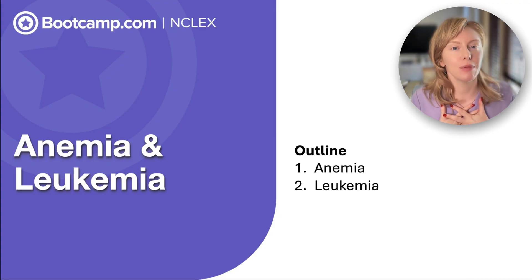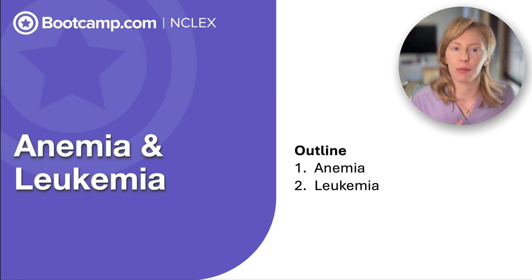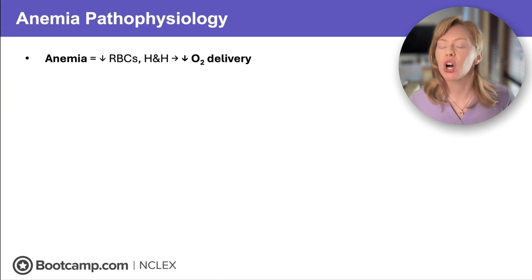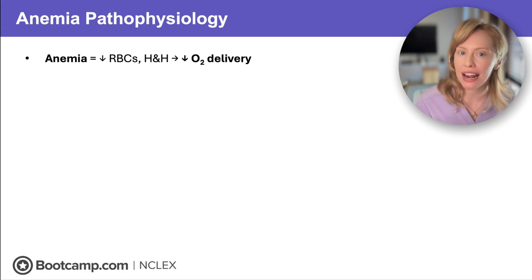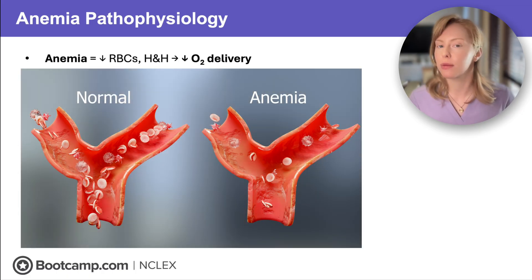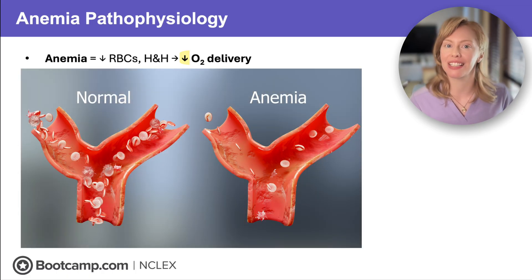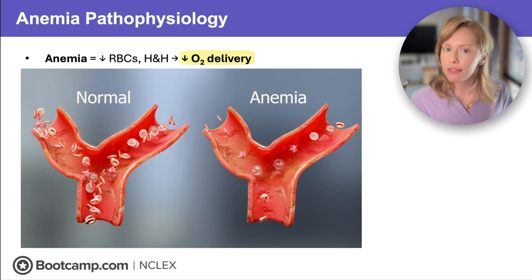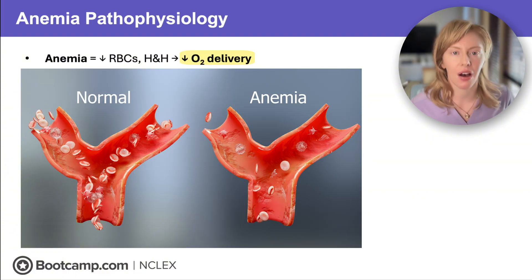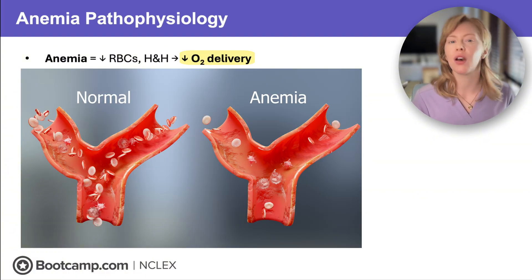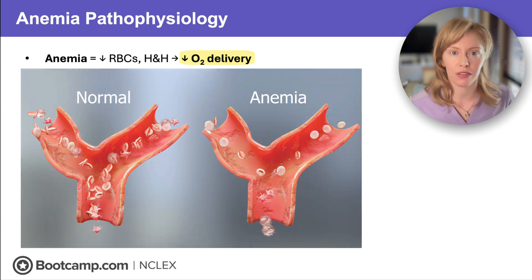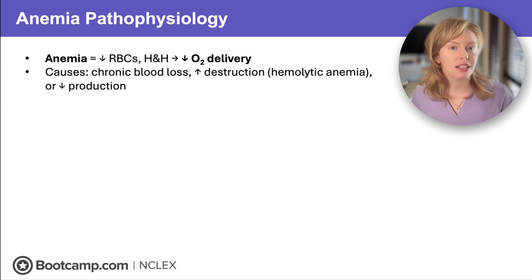I'm Dr. Emily and today we're going to break it down. Anemia occurs when you've got low RBCs, hemoglobin, or hematocrit, which decreases the oxygen-carrying capacity of the blood and decreases oxygen delivery to the tissues. This is going to cause hypoxia, and your patients are going to be weak, pale, and short of breath.